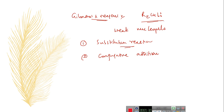In the previous video, we started the discussion of substitution reactions of Gilman's reagent. This Gilman's reagent is generally involved in the displacement of halides in organyl halides, which is also called Corey-House synthesis, and it is also involved in substitution reactions with allyl halides. In this video, let us continue the synthetic applications of Gilman's reagent, that is substitution reactions.